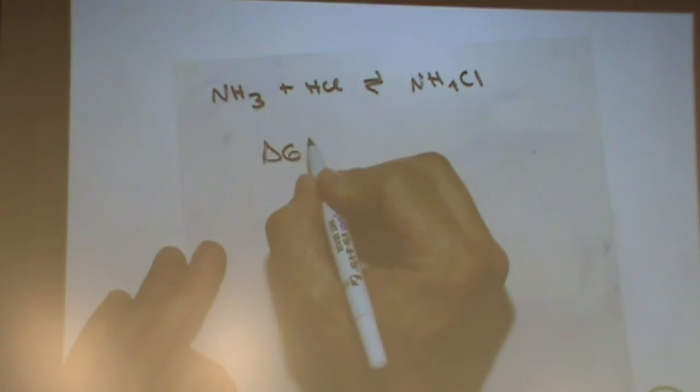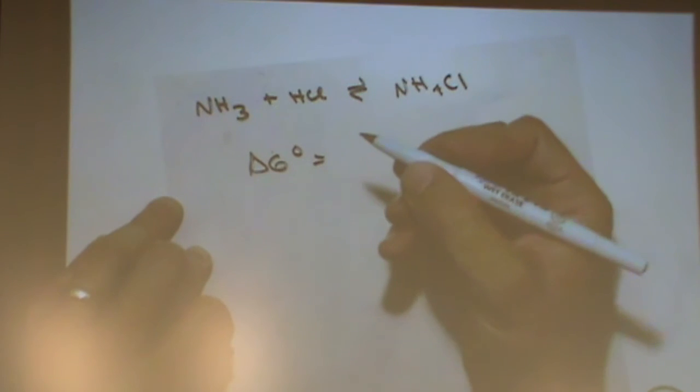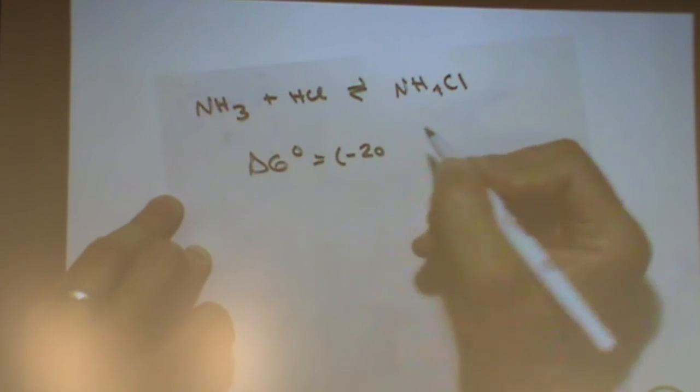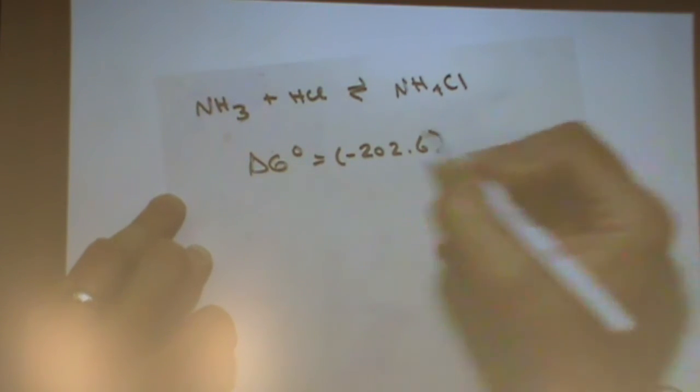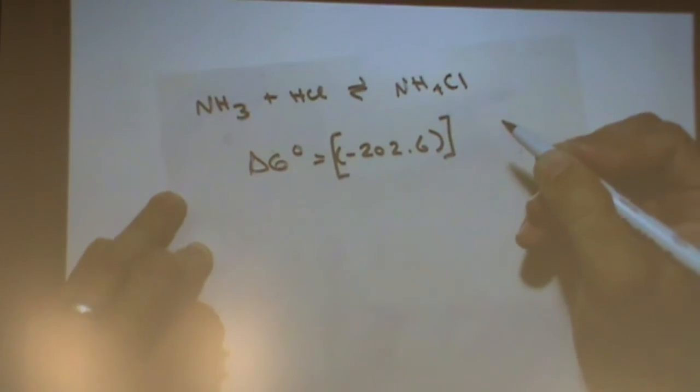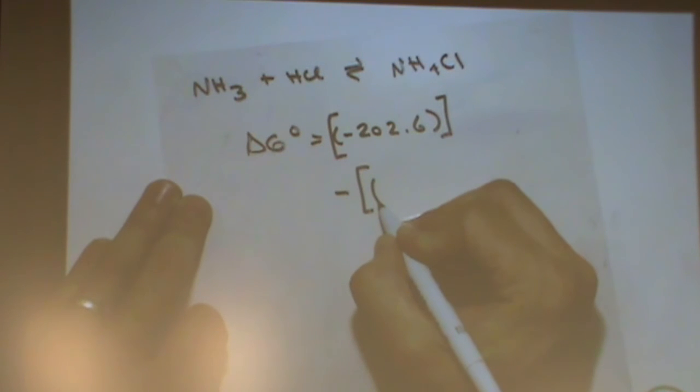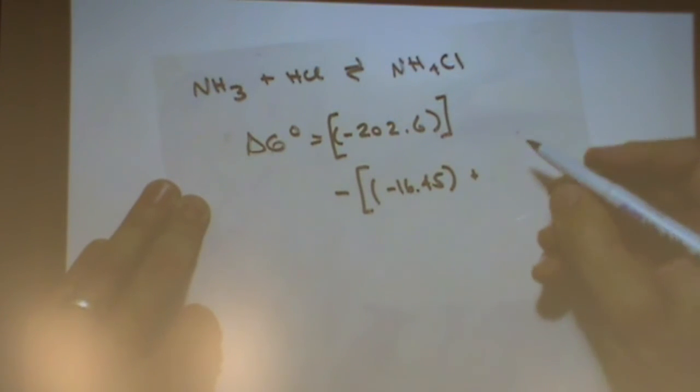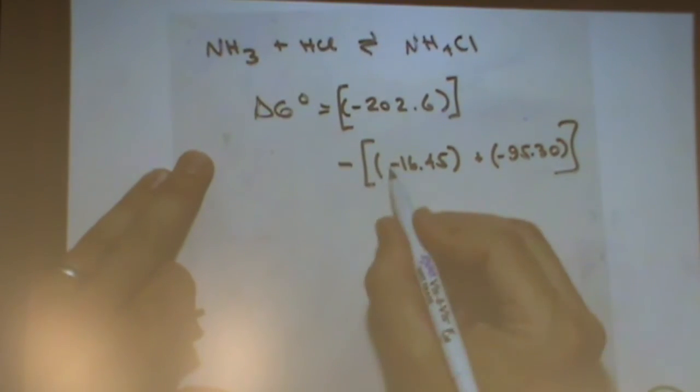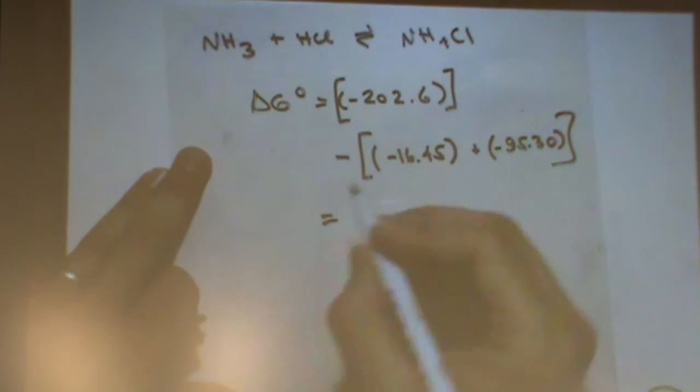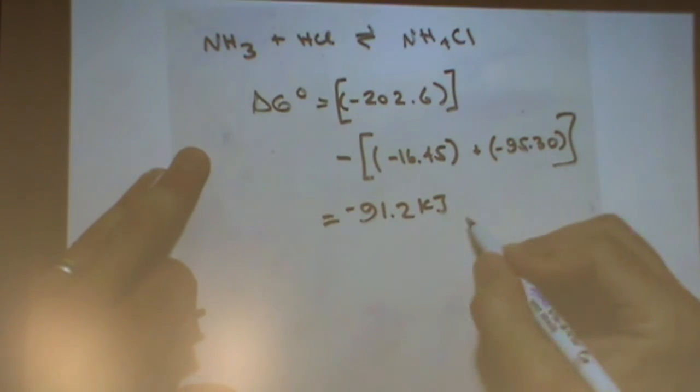Delta G standard is what we want to know. For delta G standard, it's products. That was minus 202.6, and then I like to put all the products in a bracket, and then you subtract all the reactants. I like to put all the reactants in a bracket. There's an NH3, and it's only one of them. It's minus 16.45, and then there's HCl. There's only one of them, and that's 95.30. Make sure you distribute the negative sign here appropriately. I got minus 91.2 kilojoules.